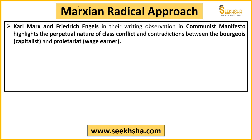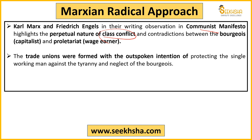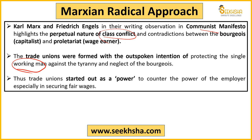We can start with the Marxian Radical Approach. Karl Marx and Friedrich Engels wrote what is called the Communist Manifesto. If we look at history, there is a history of class conflict. Class conflict exists because capitalists and wage earners are both in conflict. The capitalist class has its own interests, and the wage earners protect themselves through trade unions. Trade unions were formed so that workers could make collective decisions. This is the main purpose and mode of trade unions.